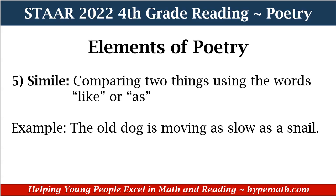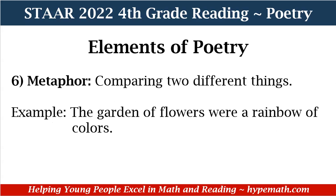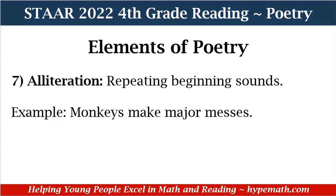Number six, we have metaphor — comparing two different things. Our example is: 'The garden of flowers was a rainbow of colors.' Number seven, we have alliteration — repeating beginning sounds. Example: 'Monkeys make major messes.' The beginning sound is M for each word.